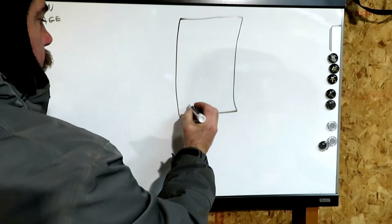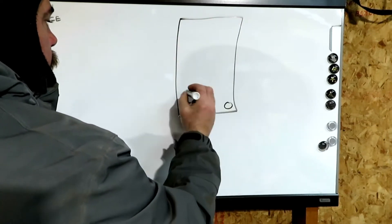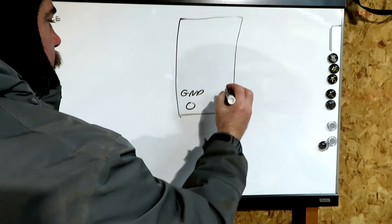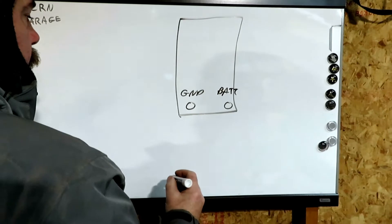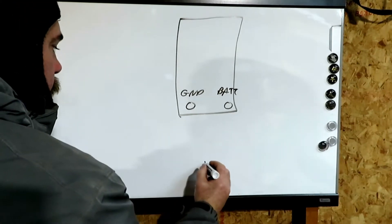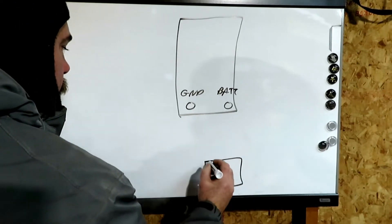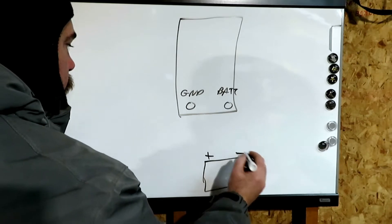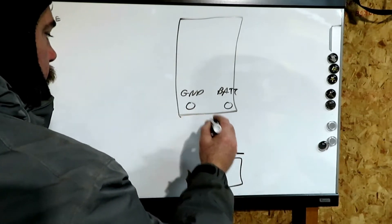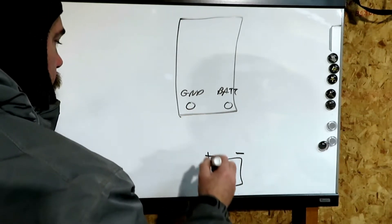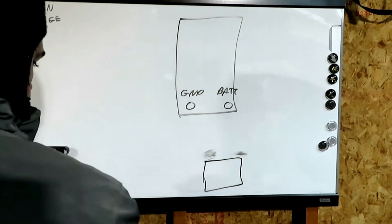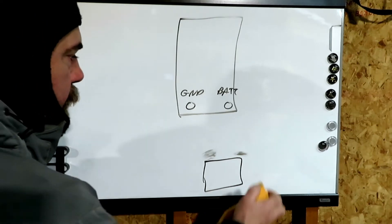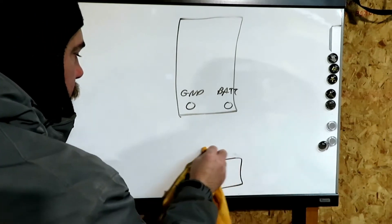Just a rectangle, two terminals: GND and BATT. And then I'll just draw a little battery down here, a plus and a minus. This is why I'm not a professional. Bear with me. Even to wipe this off, my eraser doesn't work.